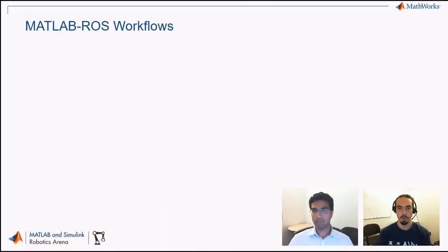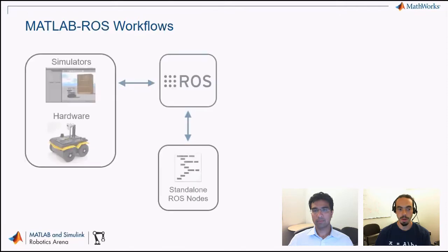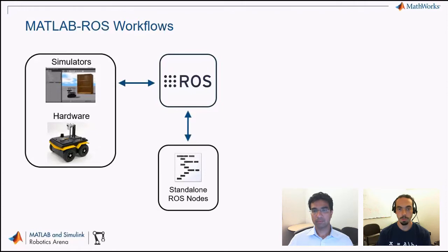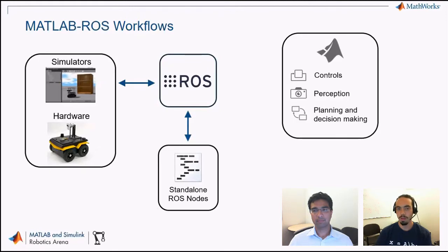Going back to our presentation, let's talk about the workflows possible between MATLAB and ROS. Let's start with a traditional ROS-based workflow. You might have a couple of platforms like simulators or actual robot hardware, and then what are known as nodes — pieces of code that represent things like algorithms, drivers, or sensor handlers — and they communicate with each other via ROS. With MATLAB, we provide a lot of capabilities for common robotics algorithms, like control, perception, planning, and decision making.